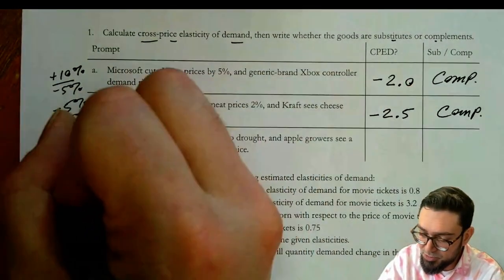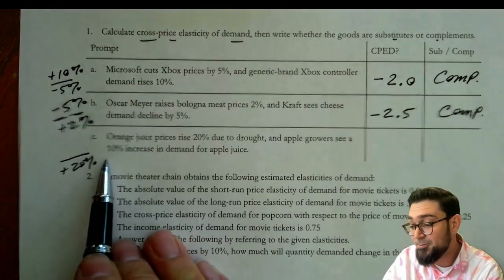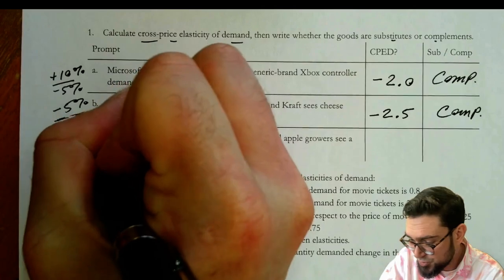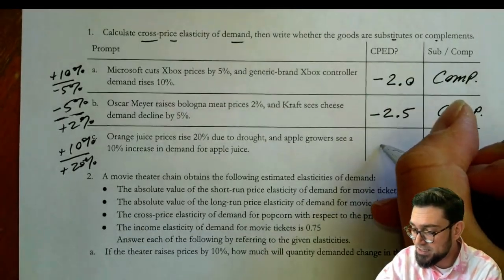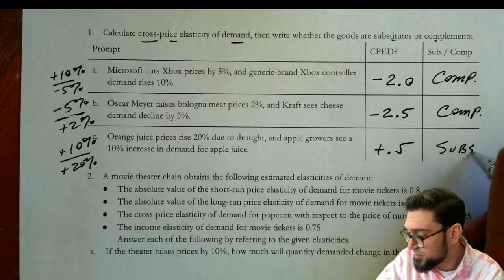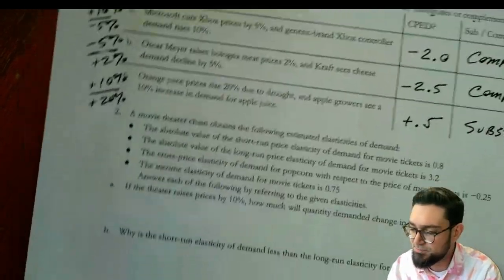Orange juice prices rise 20% due to a drought. And then apple growers see a 10% increase in demand for apple juice. And so we have positive 10 over 20, positive 0.5. And so we would say that these are substitutes. And in fact, we can even say that that's kind of a weak substitute, orange juice and apple juice.